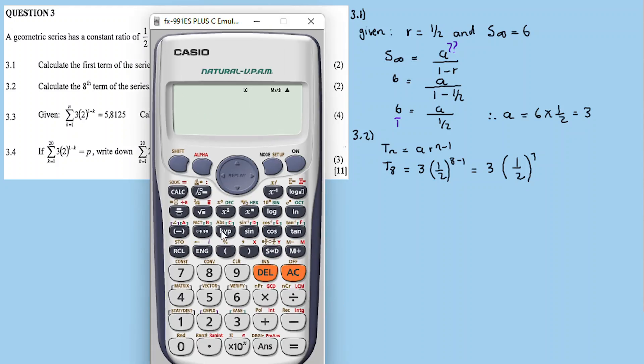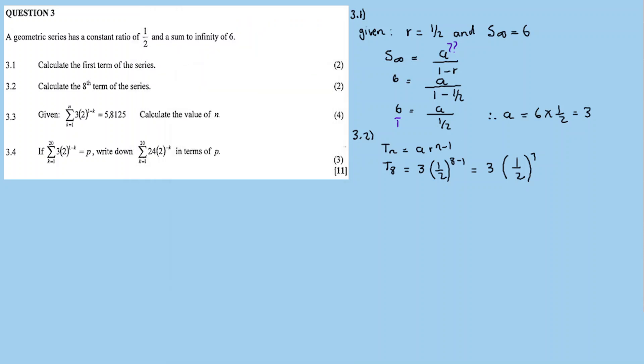8 minus 1 is 7. So it's 3 times 1 over 2 raised to exponent 7. 1 over 2 raised to exponent 7 is 1 over 128. So it's 3 in bracket, 1 over 128. 3 times this gives the answer. The 8th term is 3 over 128.